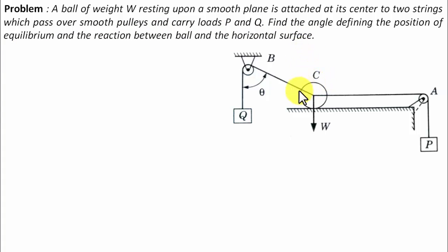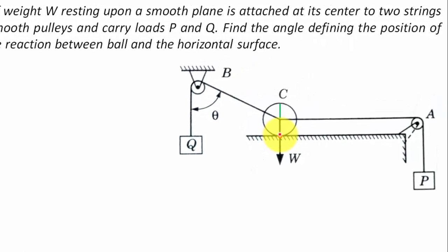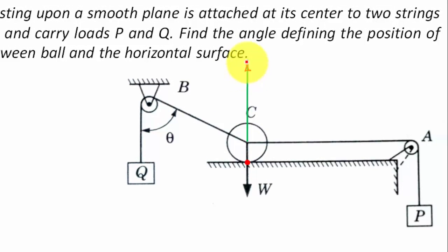So first of all let me explain this entire setup. There is a ball which has been kept onto a smooth plane and this ball is in contact over here. You can see this contact. Now since it is in contact with this smooth plane, this plane is going to offer it some sort of reaction in the upper direction. So let us say that this reaction is given by R.